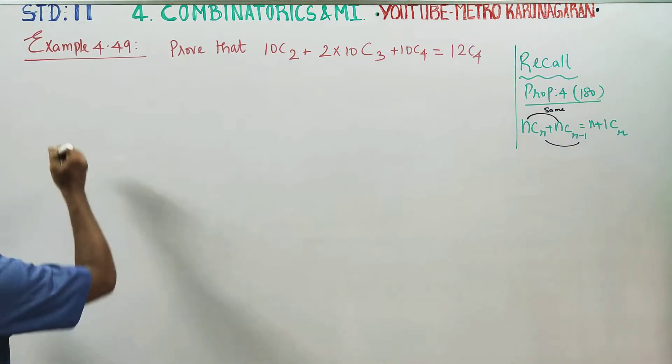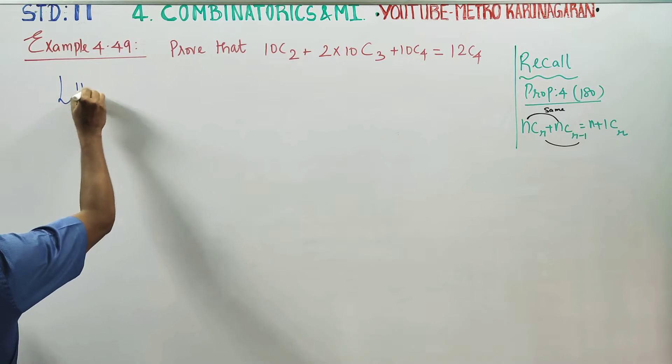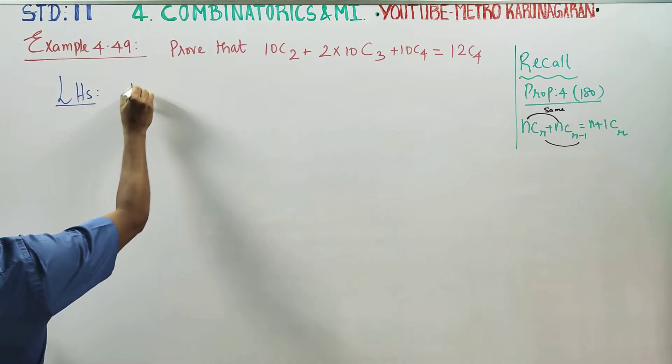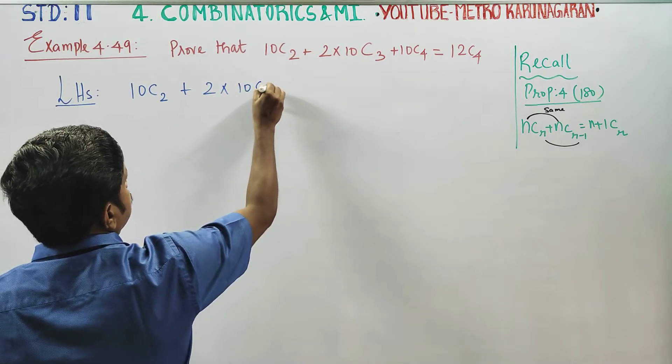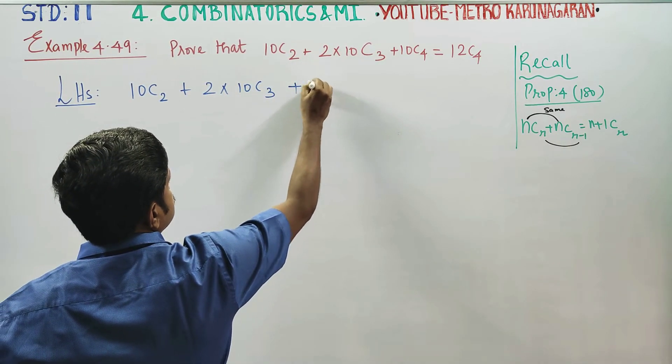First, I will start my LHS. My LHS is given as 10C2 plus 2 into 10C3 plus 10C4.